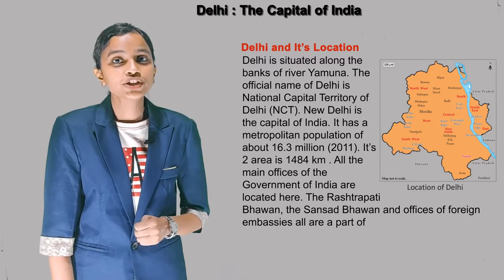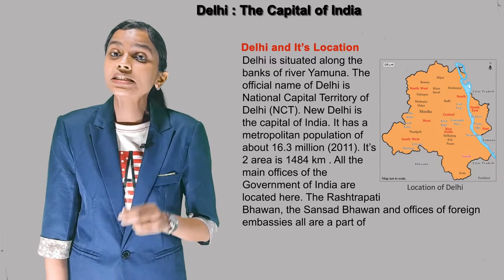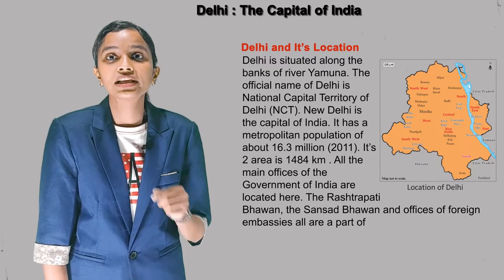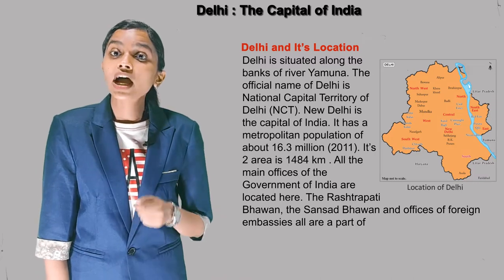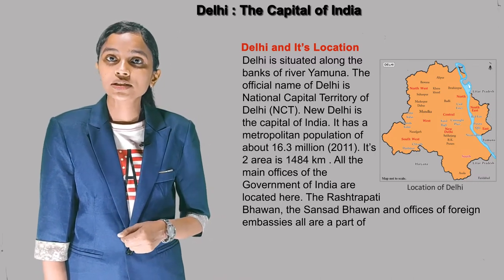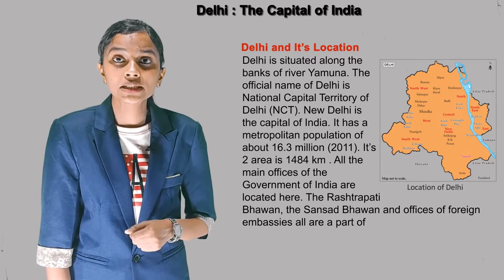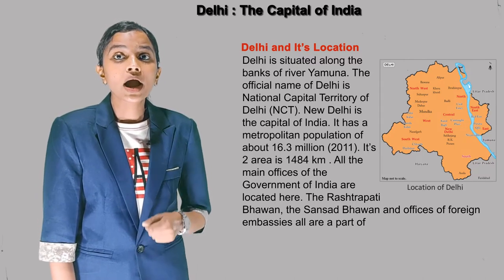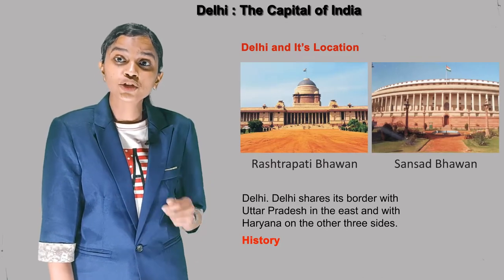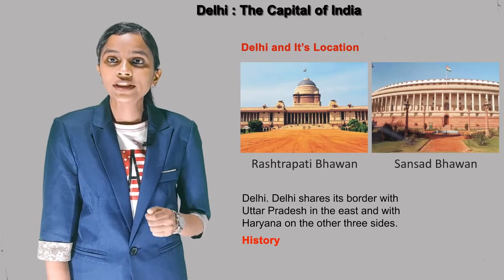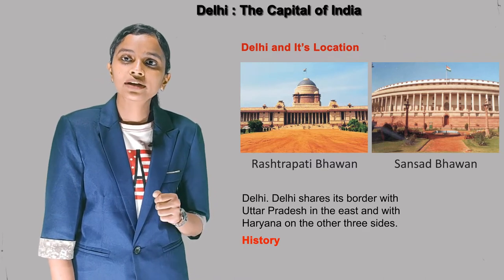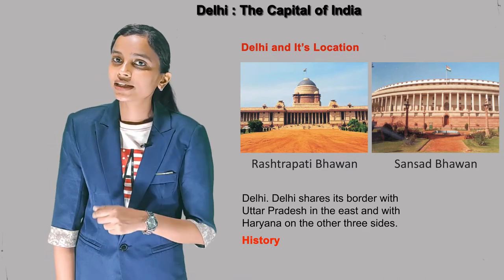The Rashtrapati Bhavan and the offices of foreign embassies are all part of Delhi. Delhi shares its border with Uttar Pradesh in the east and with Haryana on the other three sides.